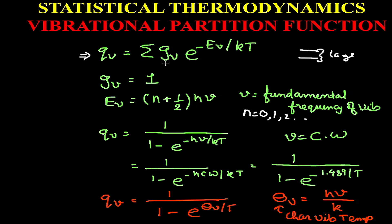When we substitute both these values and solve the expression, we get Qv = 1/(1 - e^(-hν/kT)). This is the expression for the vibrational partition function